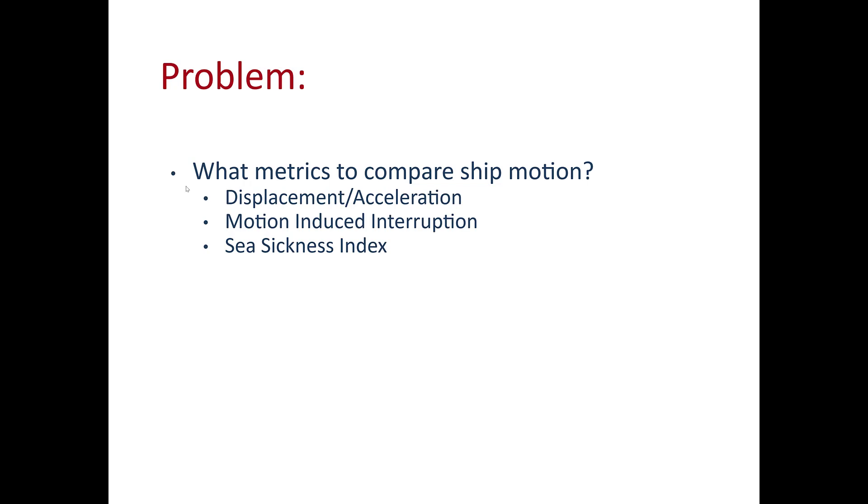What metrics are we typically looking at to compare ship motion and understand ship motion? Well, things like displacement, acceleration, and this can be at the center of gravity of the ship, but also at any place on the ship, on the deck, or anywhere in the volume taken up by the ship. We're also looking at parameters like motion induced interruption and the seasickness index.